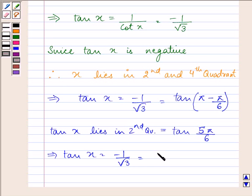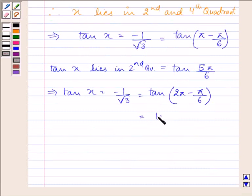If the value of tan x is in the fourth quadrant, we obtain its value by subtracting pi by 6 from 2 pi, which gives us tan 11 pi by 6.